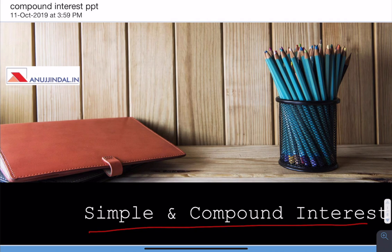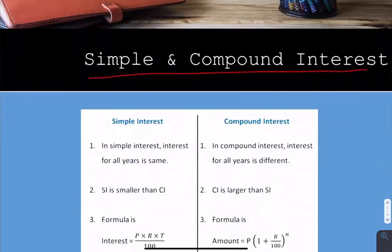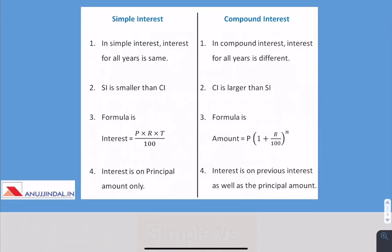If you like this video, do not forget to subscribe to our channel to get more such videos. So let's begin. First, I will discuss some basic differences between the two types of interest: simple and compound. The first point of difference is that in simple interest, interest is the same for all the years, whereas in compound interest, interest is different for all the years.